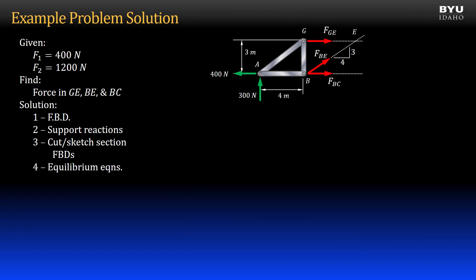I will apply the equations of equilibrium to solve for the three unknowns. If I sum moments to zero about point B, there will be only a single unknown in my equation, force GE. My equation has the 300 newton reaction force times its moment arm, 4 meters, acting in the negative direction based on the right-hand rule.